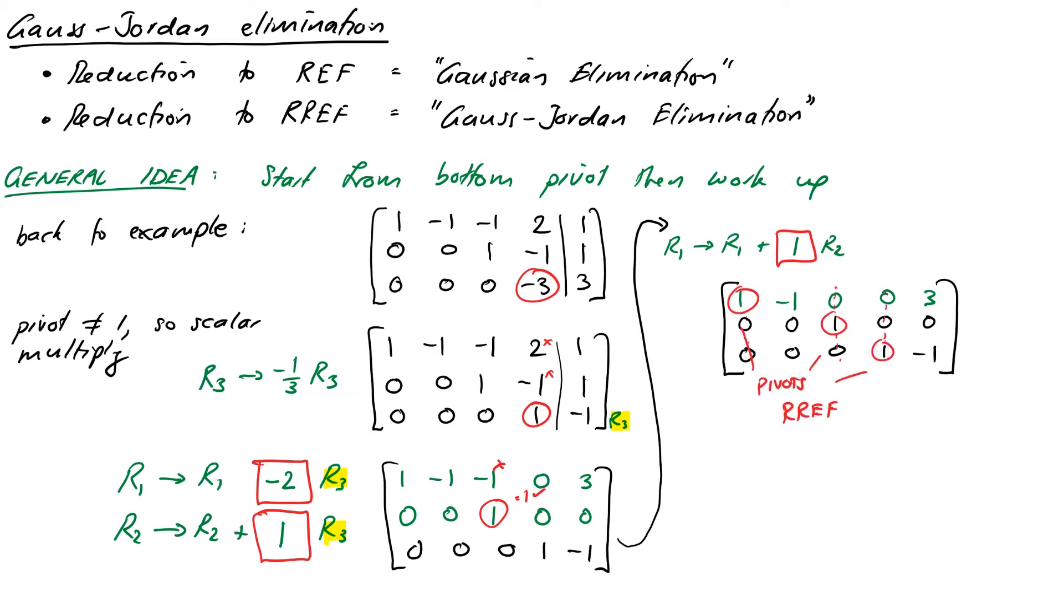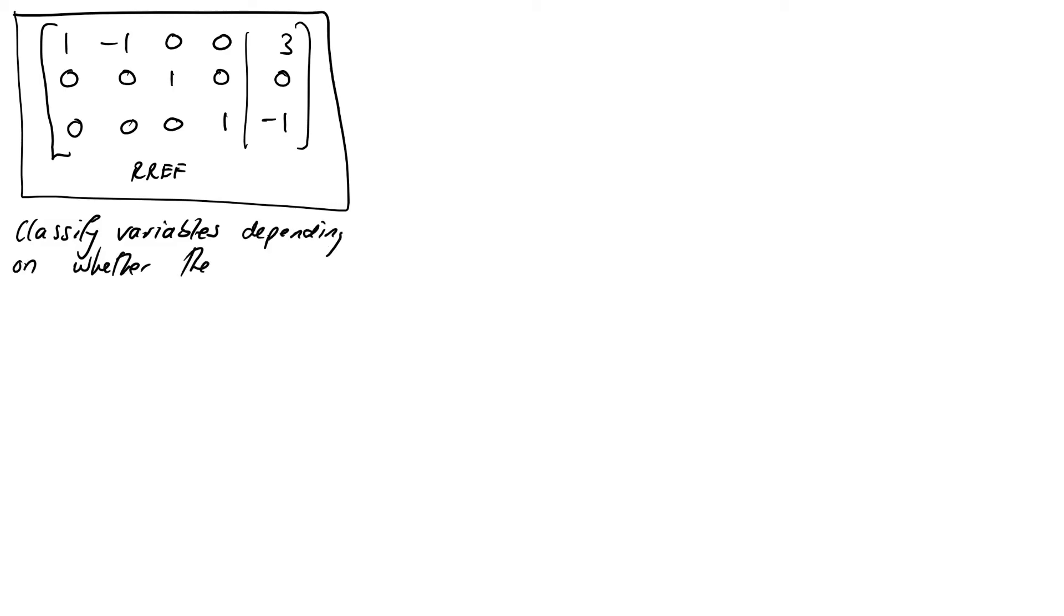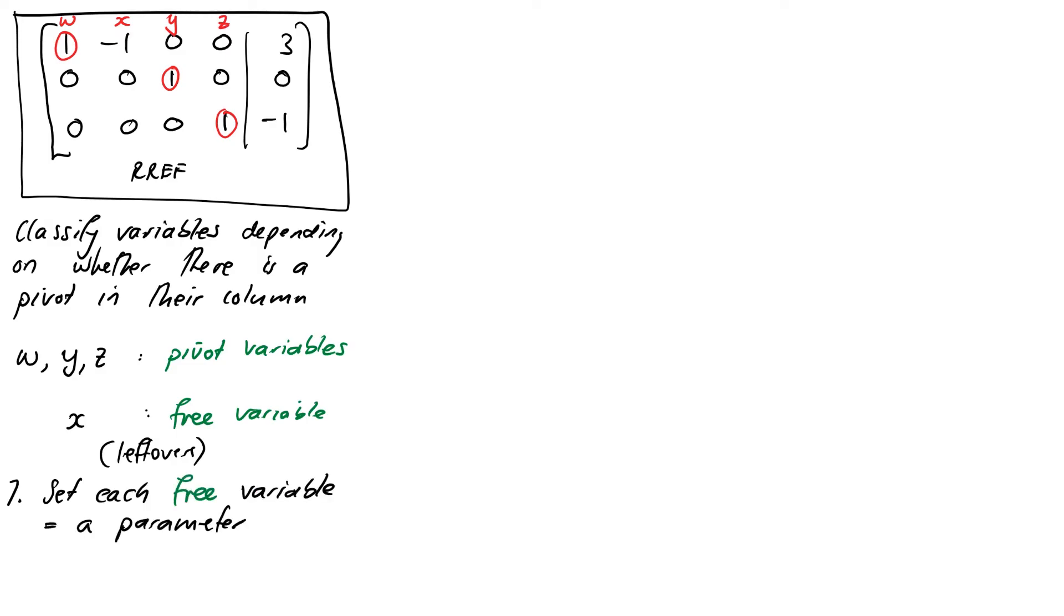Okay, so next we're going to work towards our general solution. So what we're going to do now is to classify our variables. Remember the variables for this problem? They were W, X, Y, and Z. Depending on whether there is a pivot in their column or not. Okay, so there are pivots in columns 1, 3, and 4. So the corresponding variables are W, Y, and Z. And they are therefore pivot variables. The leftovers, here that's just X. Everything else is accounted for. These are called free variables. So what we do is we set each free variable equal to a parameter. Okay, one different one each.